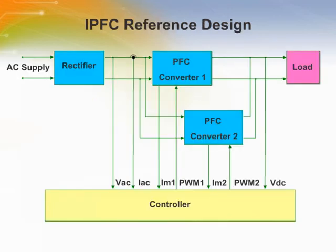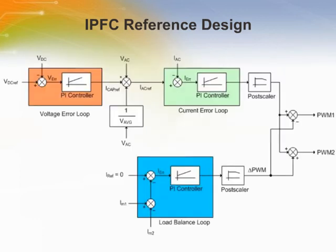A simplified block diagram of a dual-phase interleaved power factor correction is shown. A second power factor correction converter is added sharing the same inputs and outputs. The difference from a single-stage design is that two inductors are used for energy storage. Since energy should be distributed equally, a load balancing controller is added to compensate for variations in inductance values or feedback circuits.